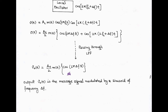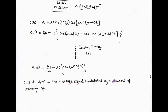This is the effect of frequency error delta_f at the output of the coherent detector. The output is the message signal modulated by a sinusoidal of frequency delta_f.